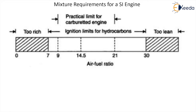Between these two, there is one ratio called the chemically correct or stoichiometrically correct mixture — the mixture of air and fuel in which the total quantity of air will be utilized to completely burn the part of fuel which has been supplied. So it will be neither rich nor lean — it will be a chemically correct mixture. These are the air and fuel mixtures.